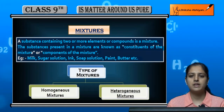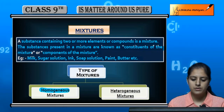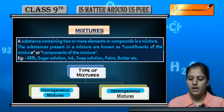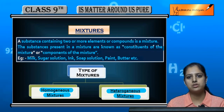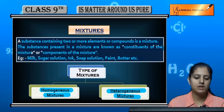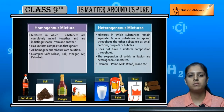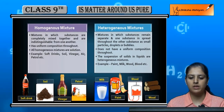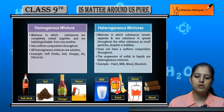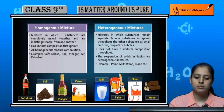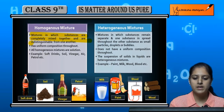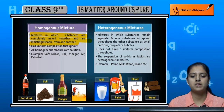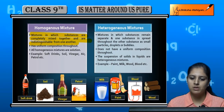There are two types of mixtures: first is homogeneous mixture, and second is heterogeneous mixture. We will compare these two and see what differences exist between them. Mixtures in which substances are completely mixed together and are indistinguishable from one another are called homogeneous mixtures.